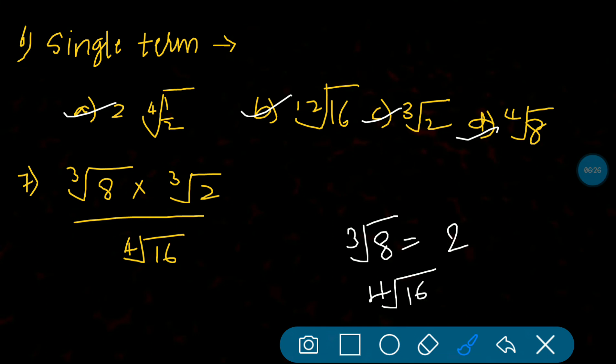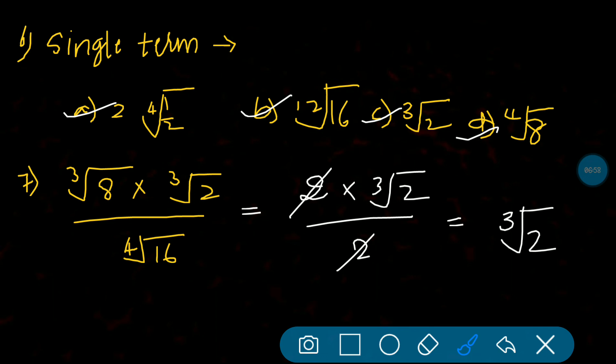Fourth root of 16 is 2 because 2 power 4 is 16 - 2 times 2 is 4, 4 times 2 is 8, 8 times 2 is 16. So cube root of 8 is 2, we will substitute that here, multiplied by cube root of 2 divided by fourth root of 16 which is also 2. Now this 2 and this 2 can get cancelled and the answer is cube root of 2, which is option C.